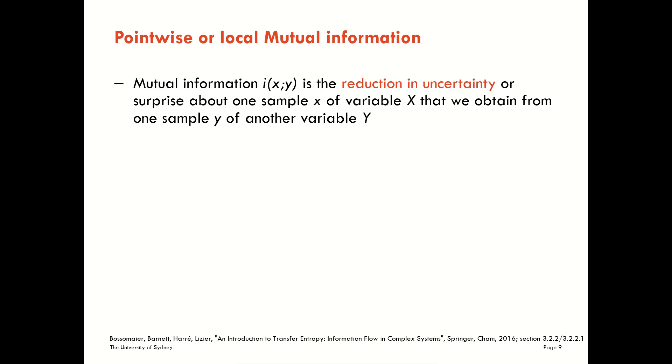As you may have noticed, when we started talking about entropies, we often started from this pointwise perspective. We started with the Shannon information content before looking at the Shannon entropy as the average of that. With the mutual information, however, I've started with the average quantities and I'm only going to come to the pointwise quantities now.